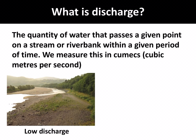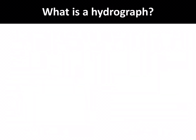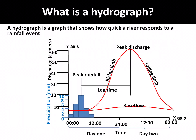On the board is a picture of a river with a low discharge. The second picture shows the same river at high discharge. We show changes in river discharge using a hydrograph — a graph that shows how quickly a river responds to a rainfall event. This is a hydrograph, and this video will break down what the graph shows.